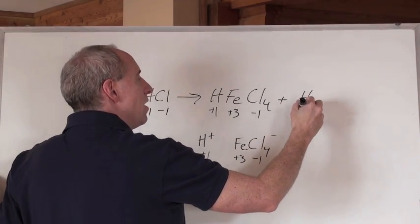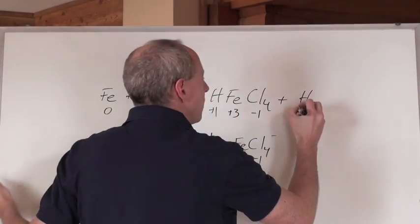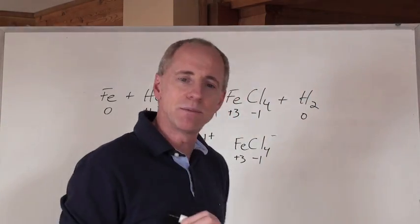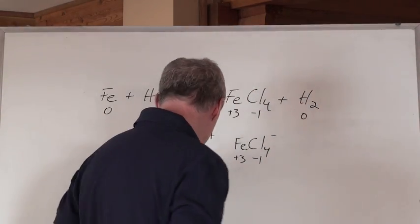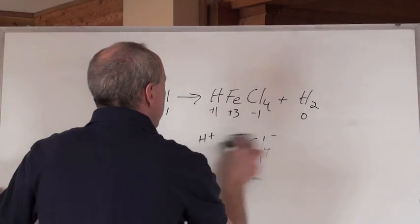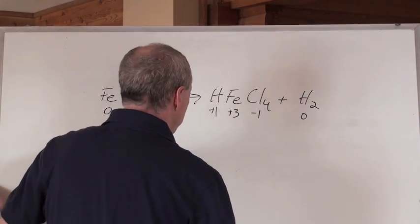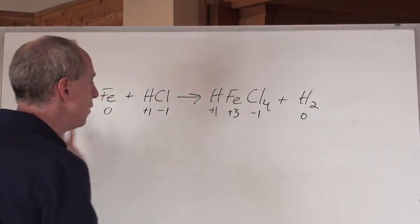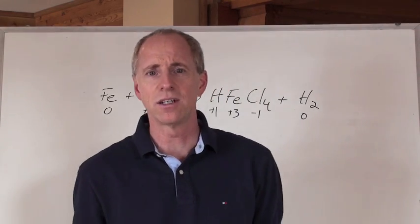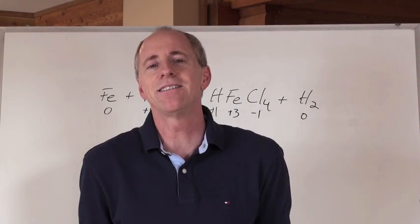There's hydrogen — it's plus one? No, it ain't. It's zero, because it's an element by itself — that's the elemental form. Now here's the thing. You've given an oxidation number for everything. Well, what that does is it kind of tells you something.